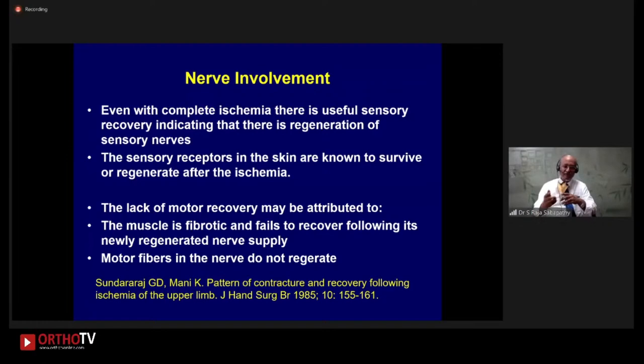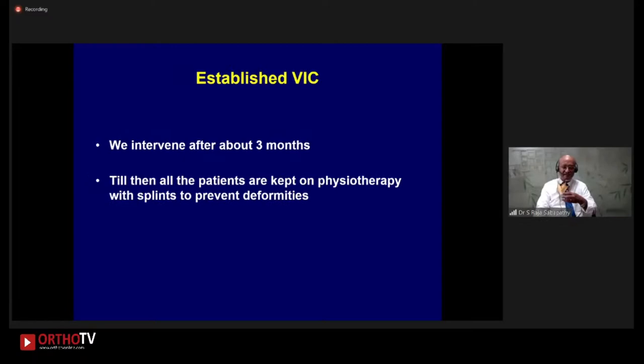Normally, when do we intervene? We intervene between two and three months. Until then, we keep all the patients in physiotherapy with splints to prevent deformities. We will do it earlier if the skin is fine and there is nerve involvement — then we may go a bit early. So I think it's clear as to when we operate. The next question is: what do we operate?